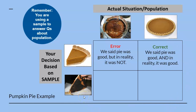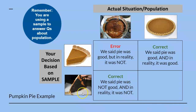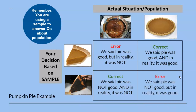Third, you ate a burnt slice of pie and made the decision that the whole pie was not good based on this particular slice. In reality, that slice came from an ugly burnt pie. In other words, you are correct in your decision — we said the pie was not good, and in reality, it was not good. Fourth, you ate a burnt slice of pie again and made the decision that the whole pie was not good. But in reality, that slice came from a beautiful tasty pie. In other words, you made an error — we said the pie was not good, but in reality, it was good.